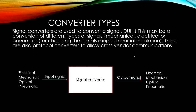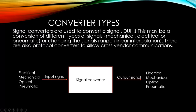What is a signal converter? Signal converters are used to convert a signal — whether it's mechanical, electrical, or pneumatic — or to change the signal's range. This is the classic input-output application done electronically, which we call linear interpolation. There are also protocol converters that allow cross-vendor communication. Different protocols like RS-232, RS-485, Modbus, HART, and Foundation Fieldbus need converters to communicate properly with each other in a control system.